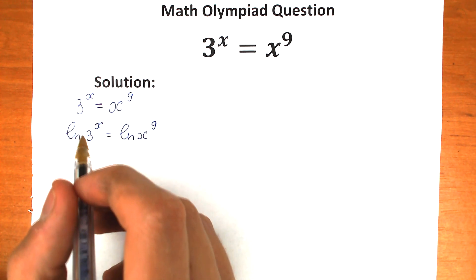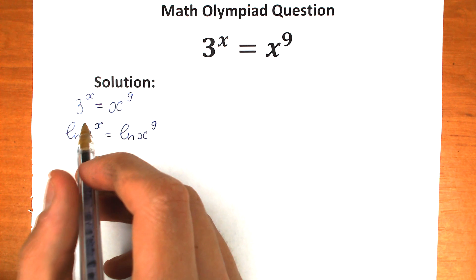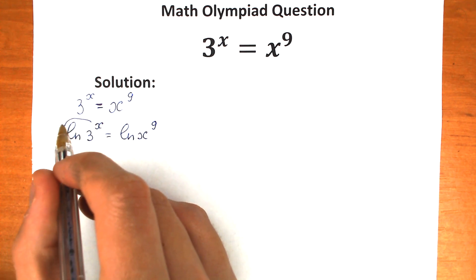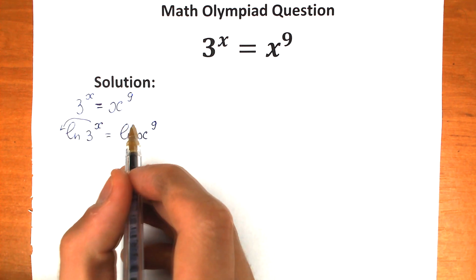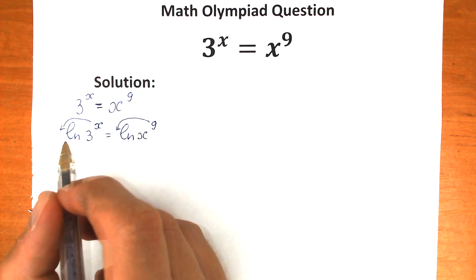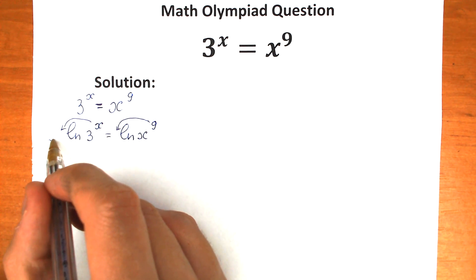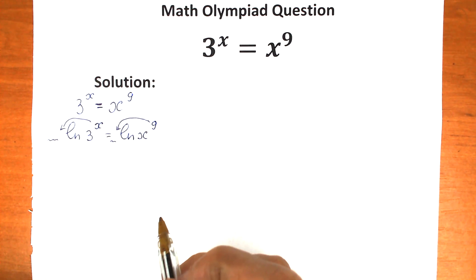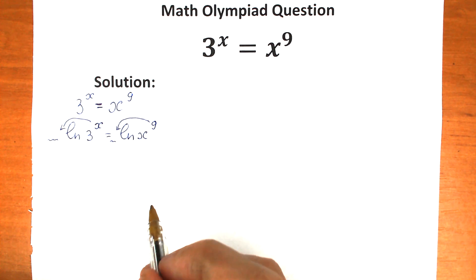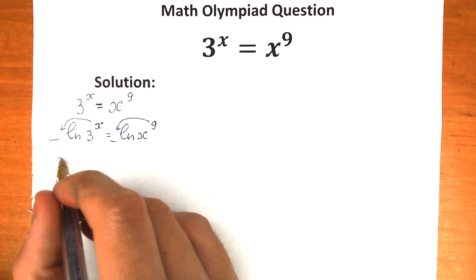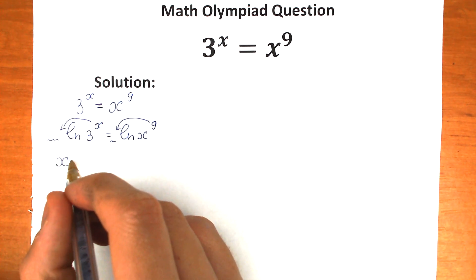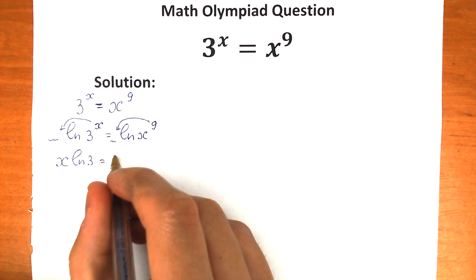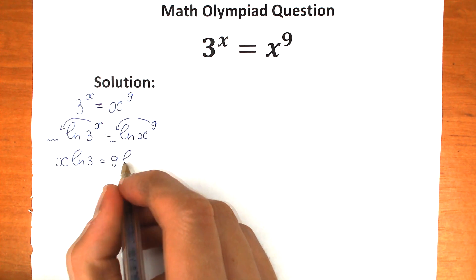We should use a really great natural log property — and it doesn't matter whether it's natural log or log — we can bring the exponent down as a multiplier. So we can write x times natural log 3 equal to 9 times natural log x.